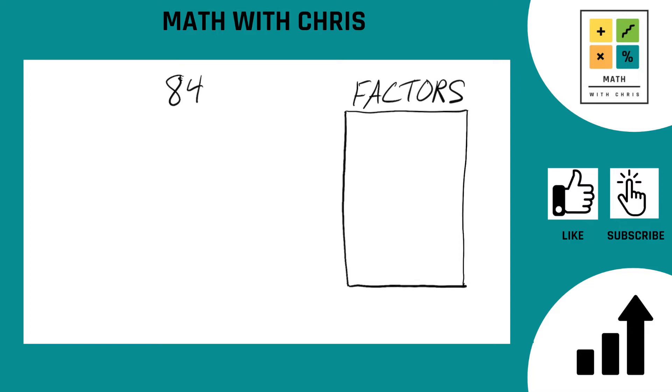What's the first thing we always do when we're looking for the factors of any number? We always bank the first two easiest numbers, that's of course 1 and the number itself, 84.